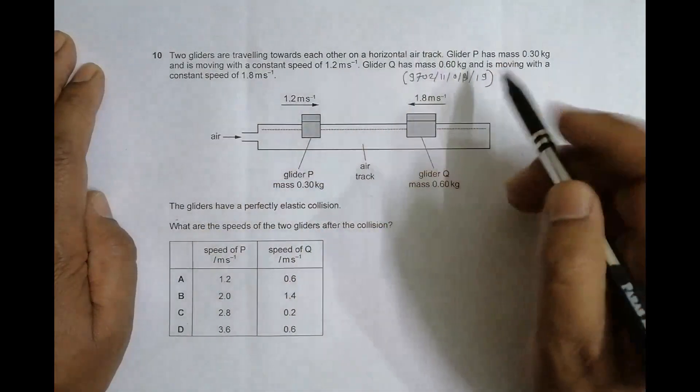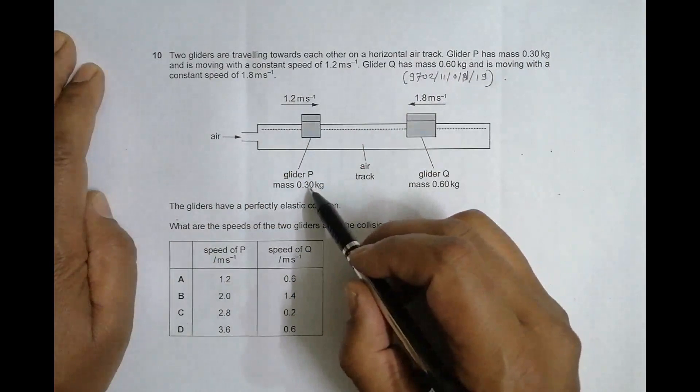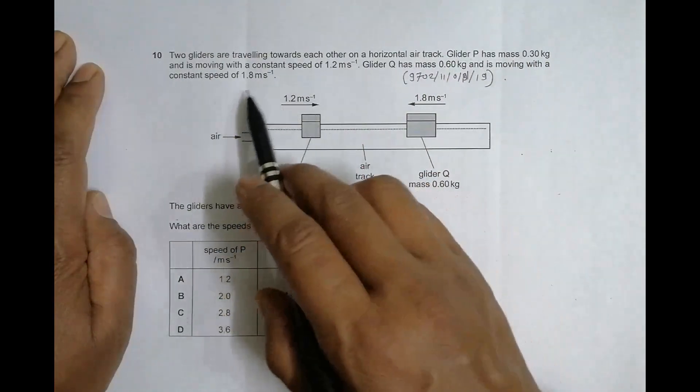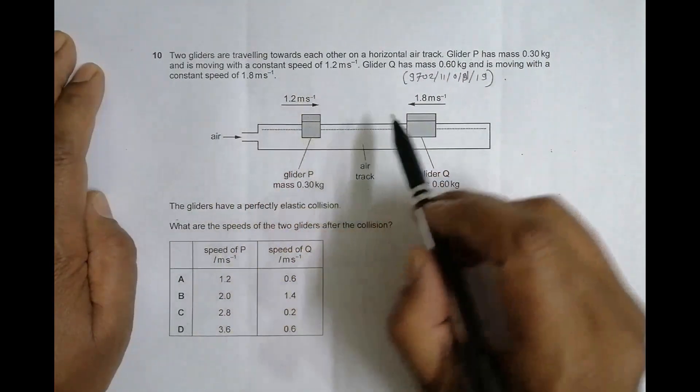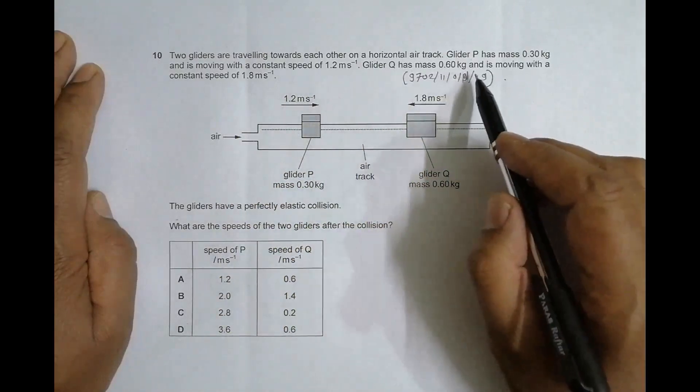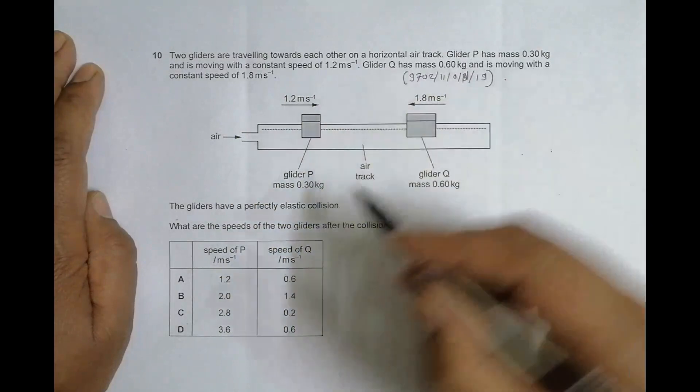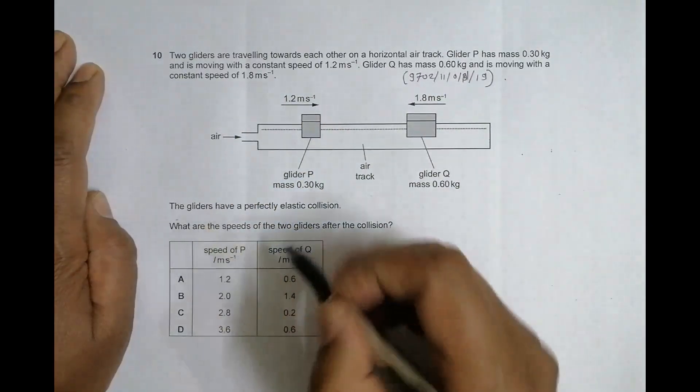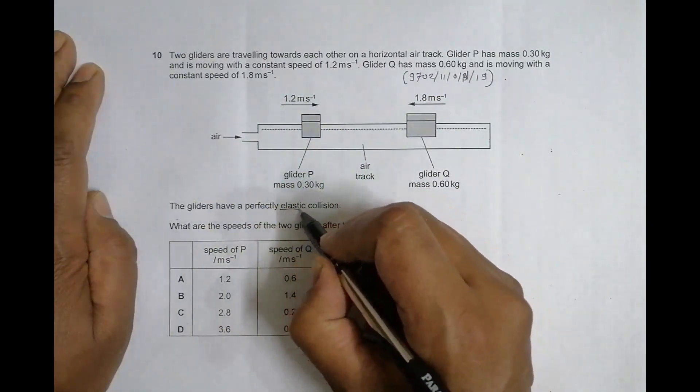It says two gliders are traveling towards each other on a horizontal air track. Glider P has a mass of 0.30 kg and is moving with a constant speed of 1.2 meter per second. Glider Q has a mass of 0.60 kg and is moving with a constant speed of 1.80 meter per second.